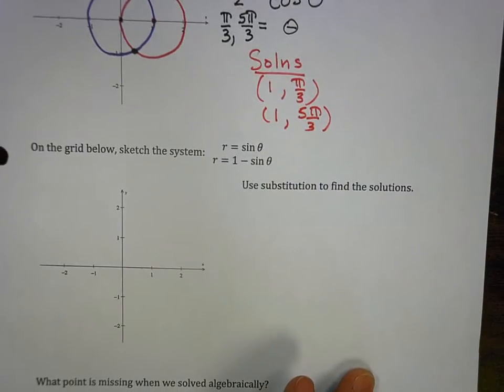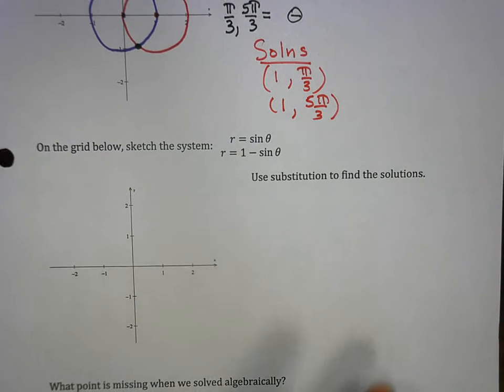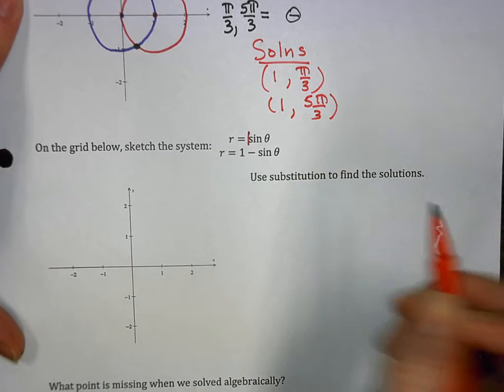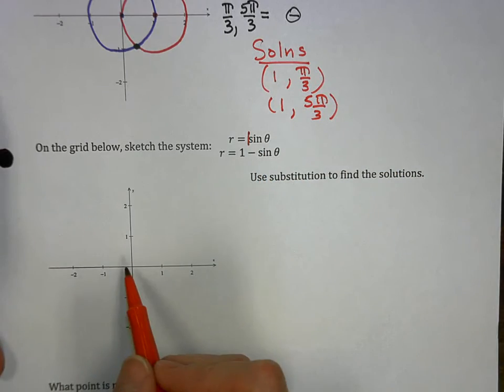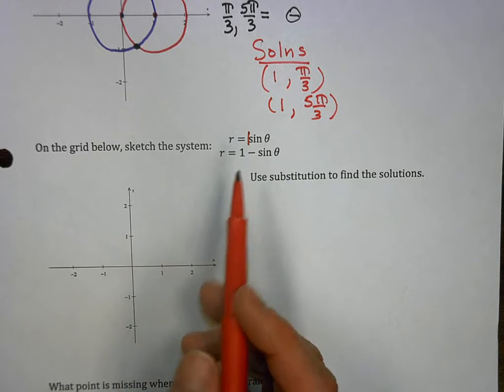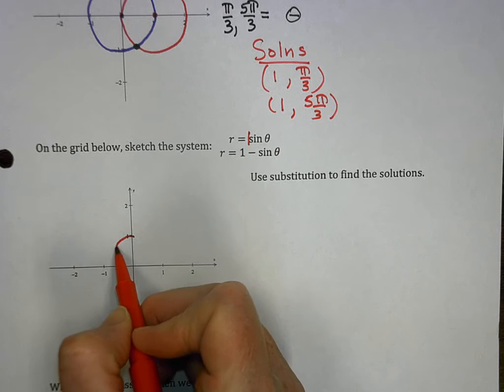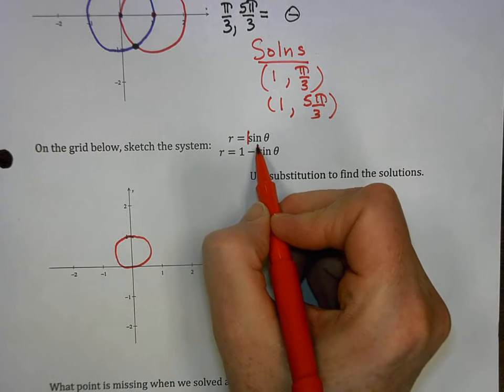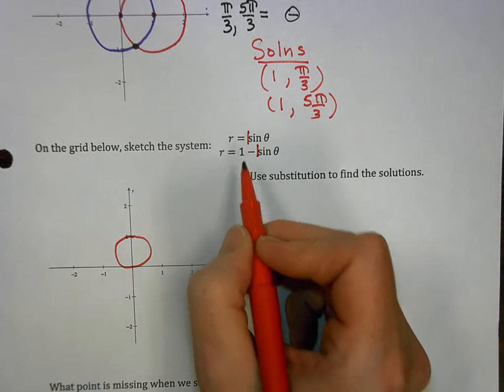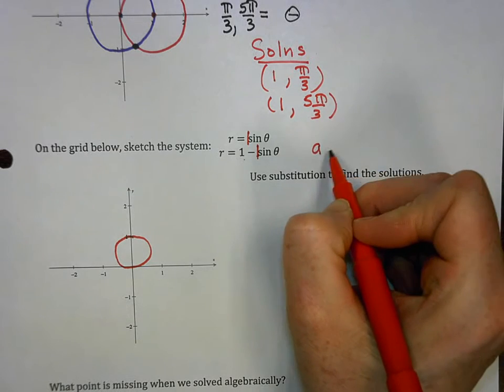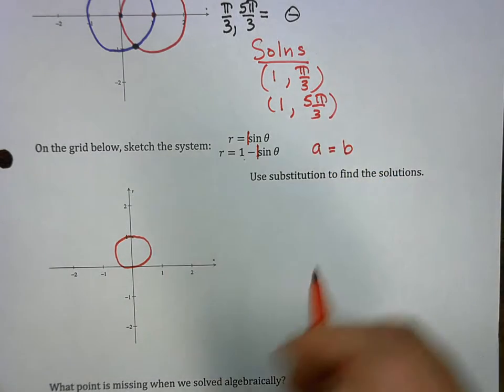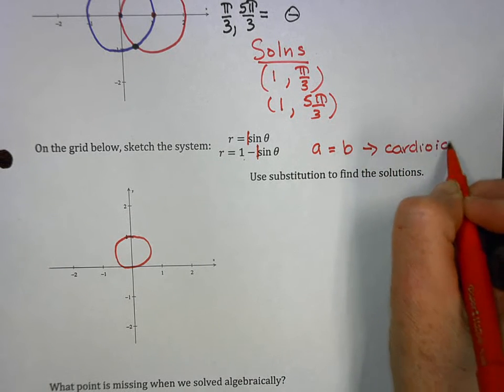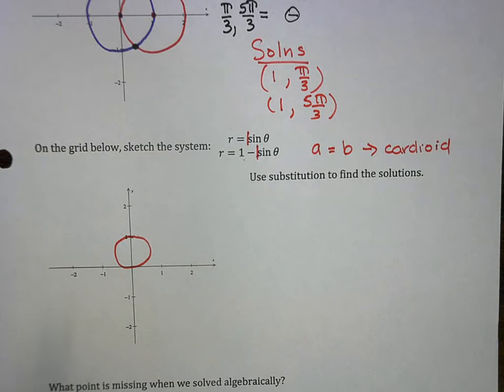Of course, it always gets more complicated. Let's sketch first. R equals, this is implicitly a one. A is one, diameter of one. It's on the sine theta axis, the y-axis, and it has a diameter of one. So I can draw that. Maybe not perfectly, but there we go. Now, one minus, again, another implicit one. So now we have an a and a b sine theta. So a equals b. So we know what that is. That is a cardioid.